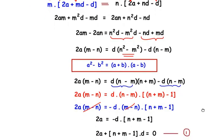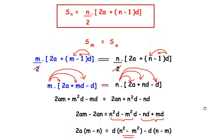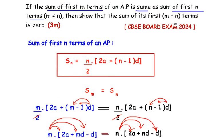After canceling m minus n from both sides, we are left with 2A on the left. Bringing the remaining term to the left hand side, the negative becomes positive, giving us 2A plus m plus n minus 1 times D equals 0. Let us call this equation 1. The question asks us to prove that the sum of m plus n terms is zero given these two sums are equal.